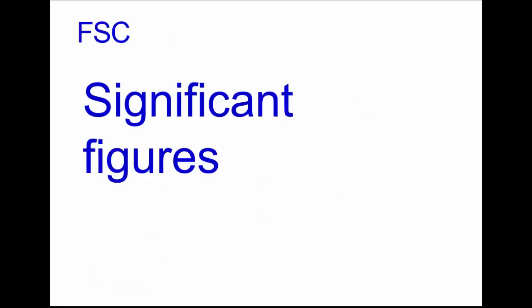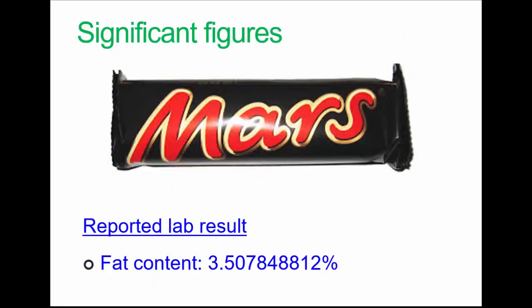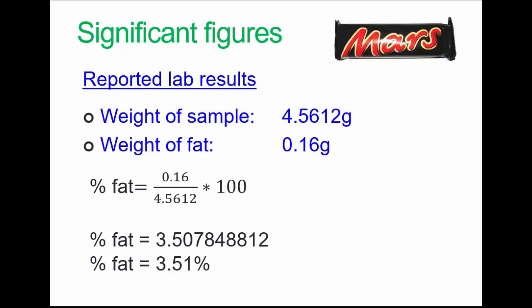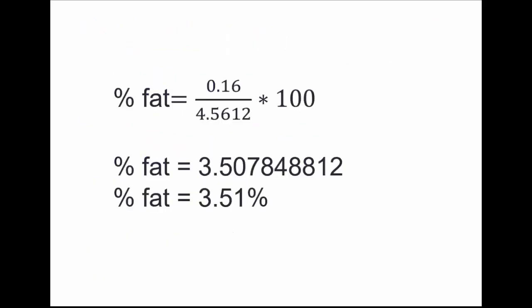I mentioned significant figures. Sometimes we see in students' reported results fat content with a long tail of decimal points, most of which really can't be justified. It's okay to keep these decimal points going through when you're doing calculations, but ultimately it comes down to what is the metric we have used with the lowest number of significant figures. Here's a calculation: we've weighed the sample to four decimal places, but we've weighed the fat we get from it only to two decimal places for various reasons associated with the method. When we do the calculation, we round it down to three significant figures, which is what we found from the weight of the fat, so 3.51% rather than the number with a long trail of decimal places. The 0.16 is the smallest number of significant figures, so that must influence what our final number of significant figures are.